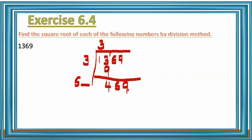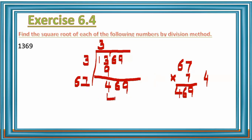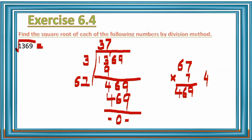Try 7: 67 × 7 = 469 — that is exactly 469. So write 7 in the quotient place, giving quotient 37. Wait — the quotient digits are 3 and 7, so the answer is 37. 469 minus 469 is 0. Therefore, the square root of 1,369 is 37.